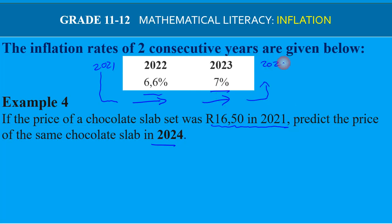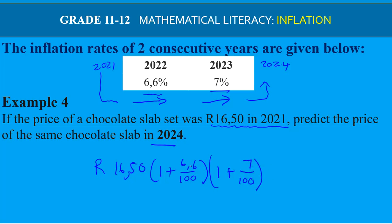Using the same method, we take the 2021 price and multiply by a bracket of (1 + 6.6/100) for 2022, then by another bracket of (1 + 7/100) for 2023. Working this out, the predicted price of the chocolate slab in 2024 is R19.56. That is the end of the Grade 11 section.